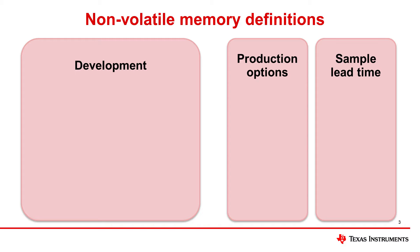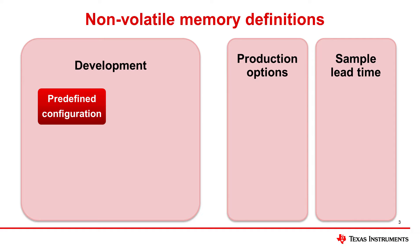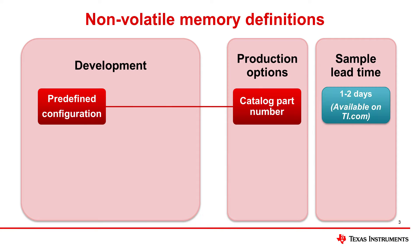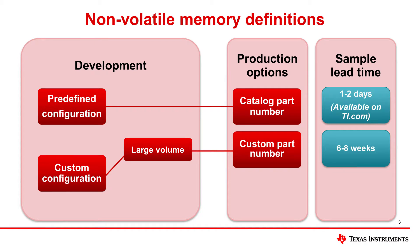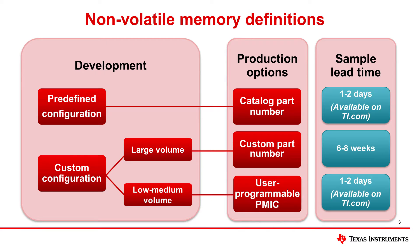TI offers different part numbers based on your non-volatile memory requirements. There are predefined configuration PMICs designed to power specific FPGAs, processors, and sensors. These factory programmed devices are the standard catalog part numbers on TI.com. For large production volumes, the customer can commission TI for a custom part number. For low to medium volumes, the customer can also choose a user programmable PMIC.